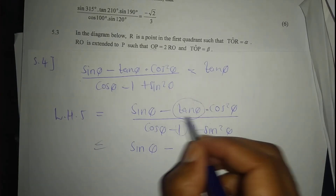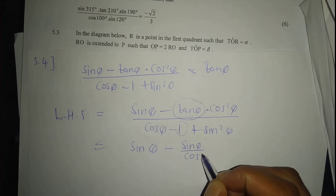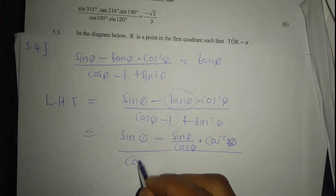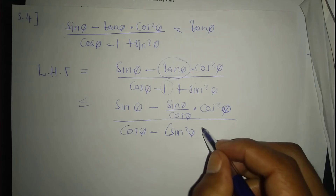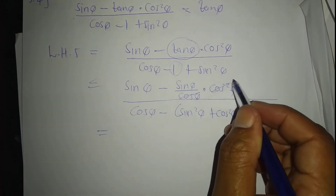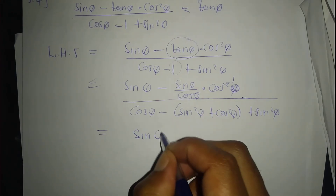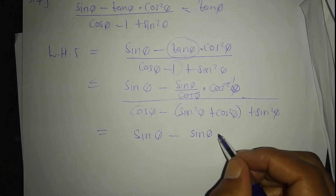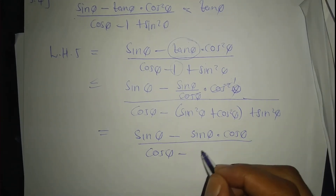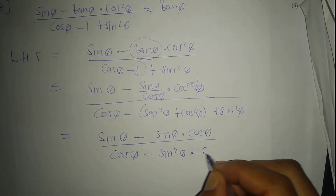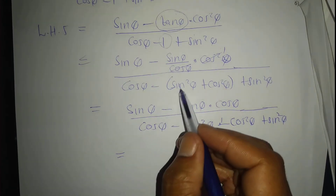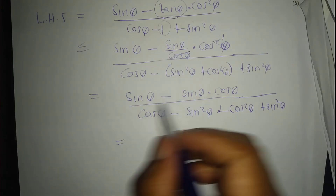So: sin theta minus (sin over cos theta) times cos² theta, divided by cos theta, minus sin² theta plus cos² theta plus sin² theta. We change the sign because we distribute the negative sign inside the bracket. Taking out a common factor of sin theta: sin theta(1 minus cos theta), divided by the denominator.